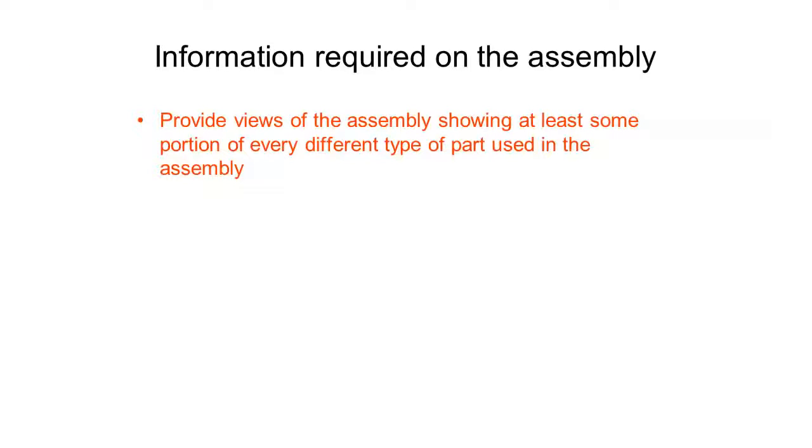First, in your assembly drawing you need to provide views showing at least some portion of every different type of part used in the assembly. There's a few intricate details in this sentence. You don't need to show every part, just as long as you've shown every different type of part. And you don't need to show all of a part, just a portion of every part.